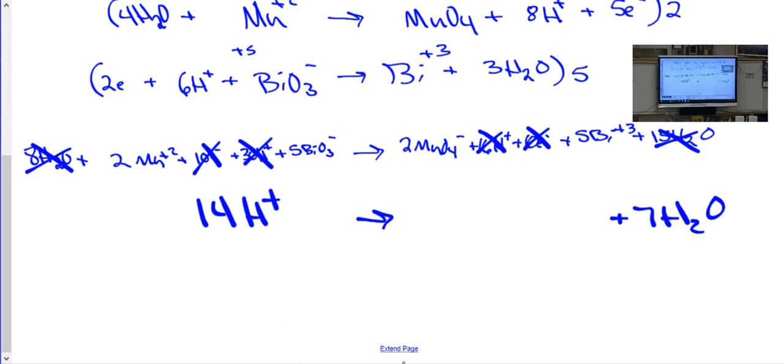Okay. And, there was nothing else to simplify, was there? So, two Mn plus two, plus fourteen H plus, plus five BiO3 minus. That was ugly. Goes to two MnO4 minus, plus five Bi. Oh, that's supposed to be Bi plus three. Okay. Who had that right? One. One, two, three, four, five, six, seven. Seven. We're almost up to half of you. Okay.